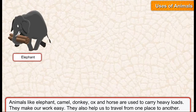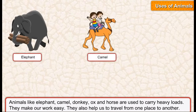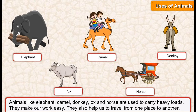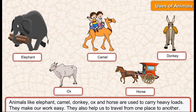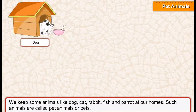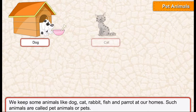Animals like elephant, camel, donkey, ox, and horse are used to carry heavy loads. They make our work easy. They also help us to travel from one place to another.